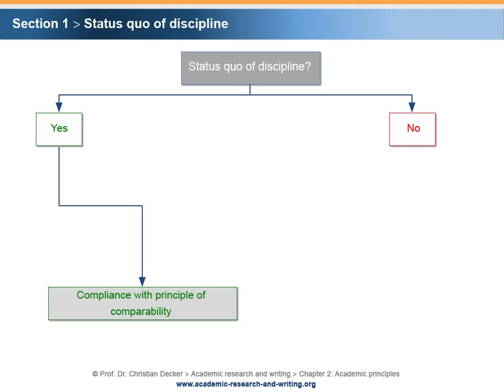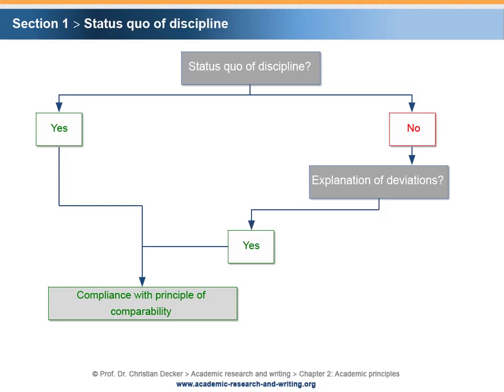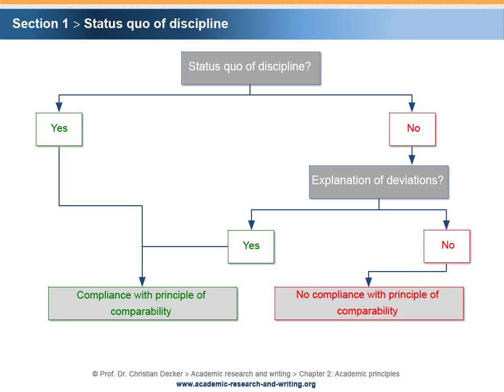Any departures from prevailing views are quite possible and, if reasonable, favored. But it is compulsory to give reasons for your deviations and to explain them in detail. However, if you explain deviations, you will again comply with the principle of comparability. If you do not explain deviations, you will not comply with the principle of comparability.